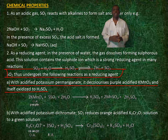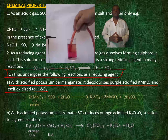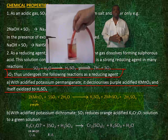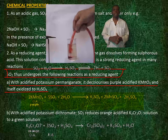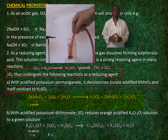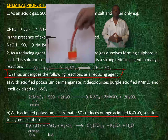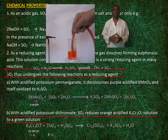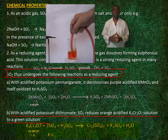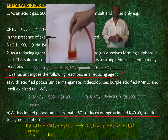With acidified potassium permanganate, sulfur dioxide decolorizes purple acidified potassium permanganate and itself oxidizes to sulfuric acid. With acidified potassium dichromate, sulfur dioxide reduces the orange acidified potassium dichromate solution to a green solution.